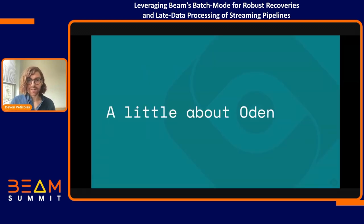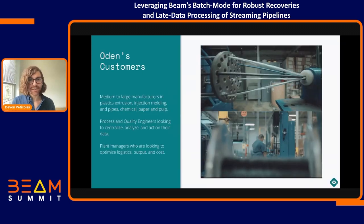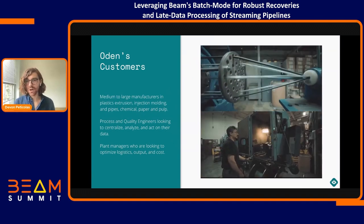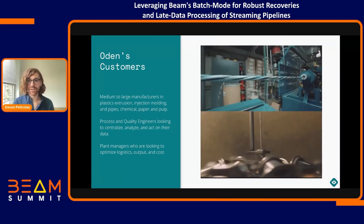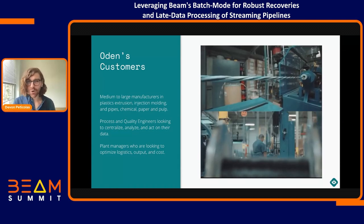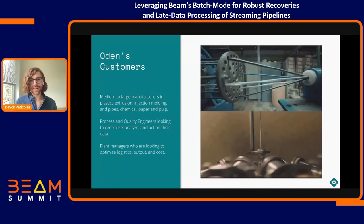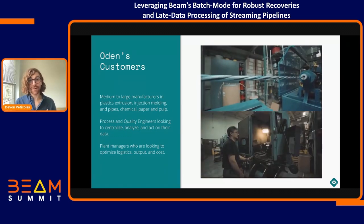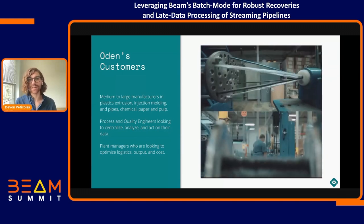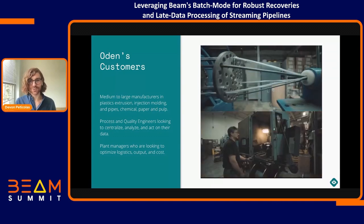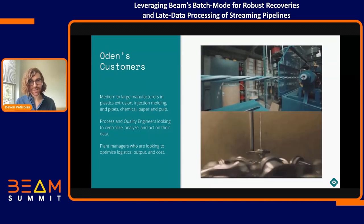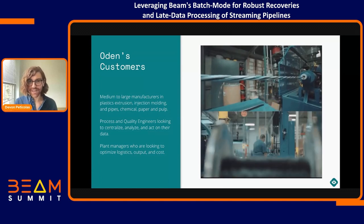Let's start by talking a little bit about Odin. We actually did a couple of earlier talks at this conference that you might want to go back and watch. To give you a high-level overview, our customers are medium to large manufacturers in plastic extrusion, injection molding, pipes, chemical, paper, pulp — anything that's kind of like a continuous process. These are all component manufacturers — not the people who build the Ford F-150, but they're building the wires that go behind the dashboard, the plastic that goes in the dashboard. You work for a company like this for a few years and you start to realize that everything around you is manufactured.